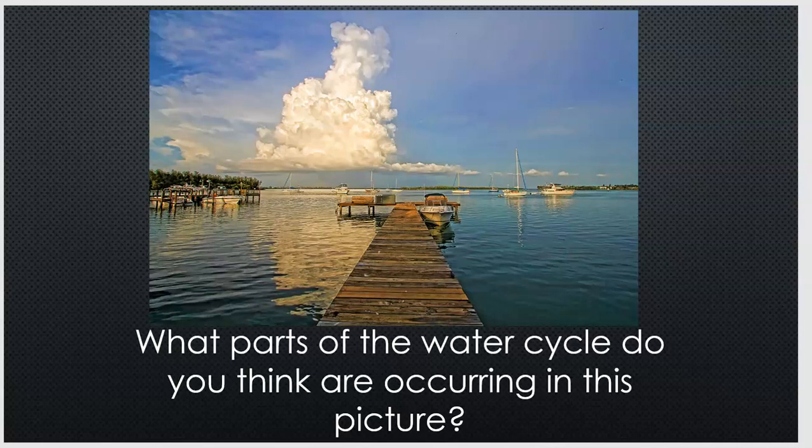What parts of the water cycle do you think are occurring in this picture? We have clouds and a reservoir of water — maybe a lake or an inlet of some sort. I also see plants in the background, and plants use water and transpire, releasing water through their stomata. So there are a bunch of different things going on.